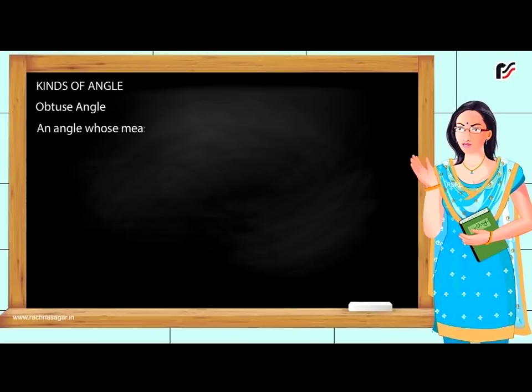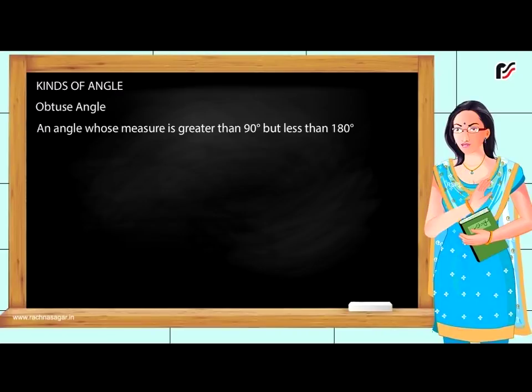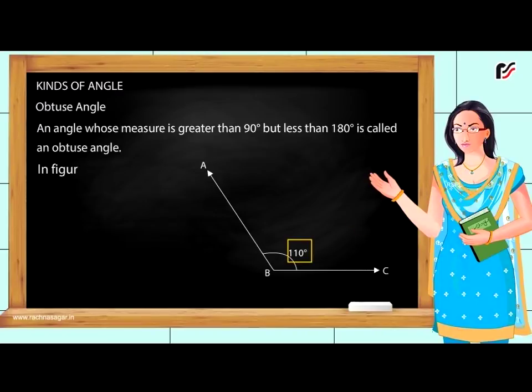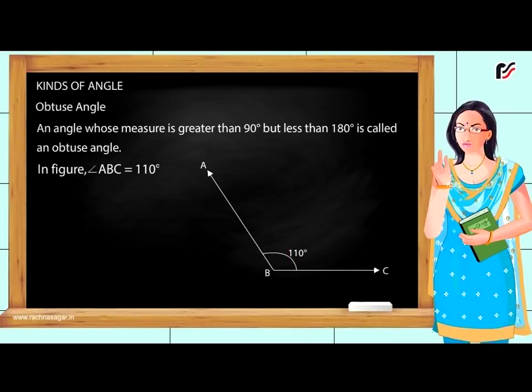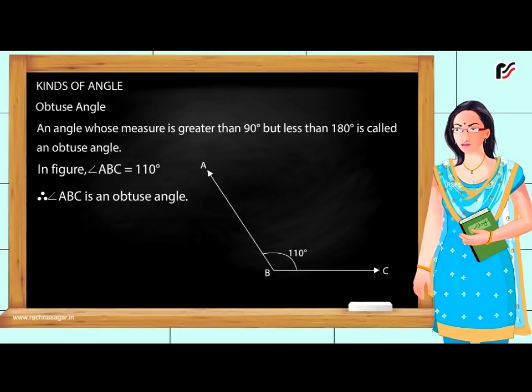Obtuse Angle: An angle whose measure is greater than 90 degrees but less than 180 degrees is called an obtuse angle. In the figure, angle ABC is equal to 110 degrees. Therefore, angle ABC is an obtuse angle.